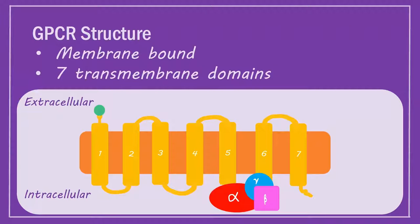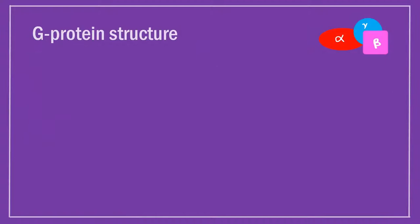The N-terminus of these receptors is extracellular, whilst their C-terminus is intracellular. Their extracellular domain binds hydrophilic ligands, whilst their intracellular domain couples to a specific heterotrimeric G-protein to bring about a cellular response.